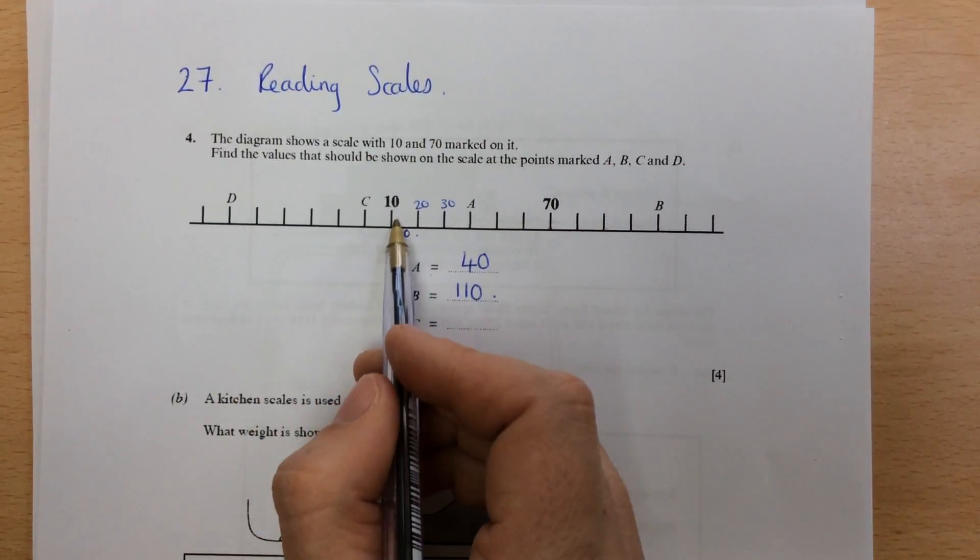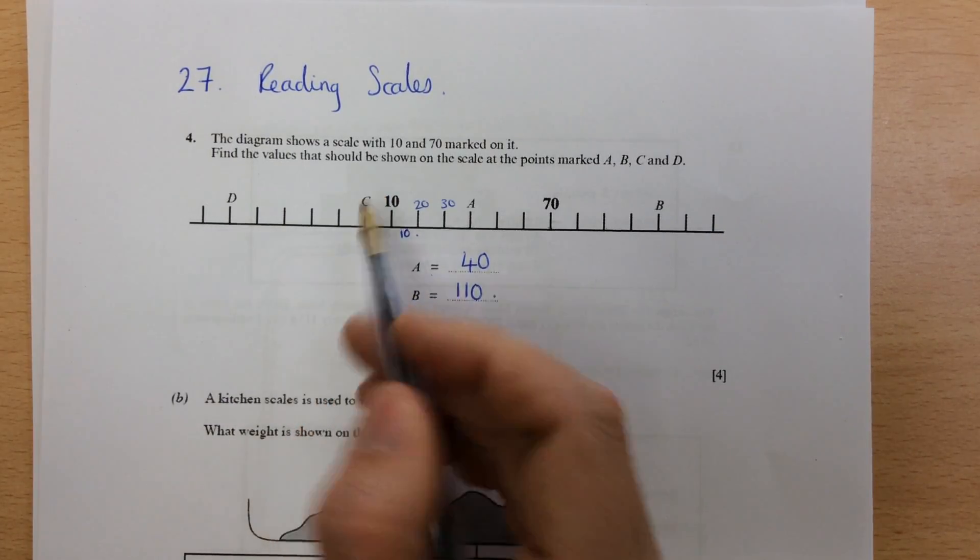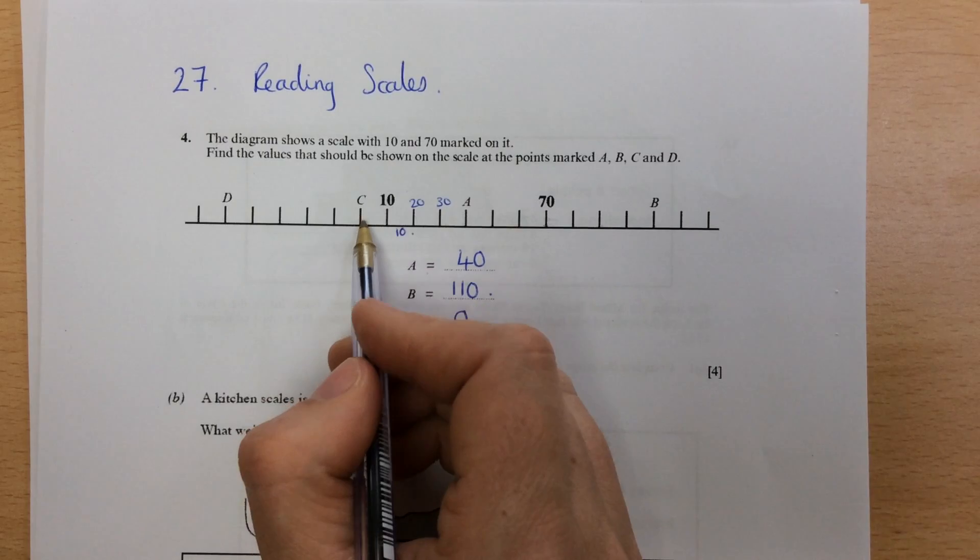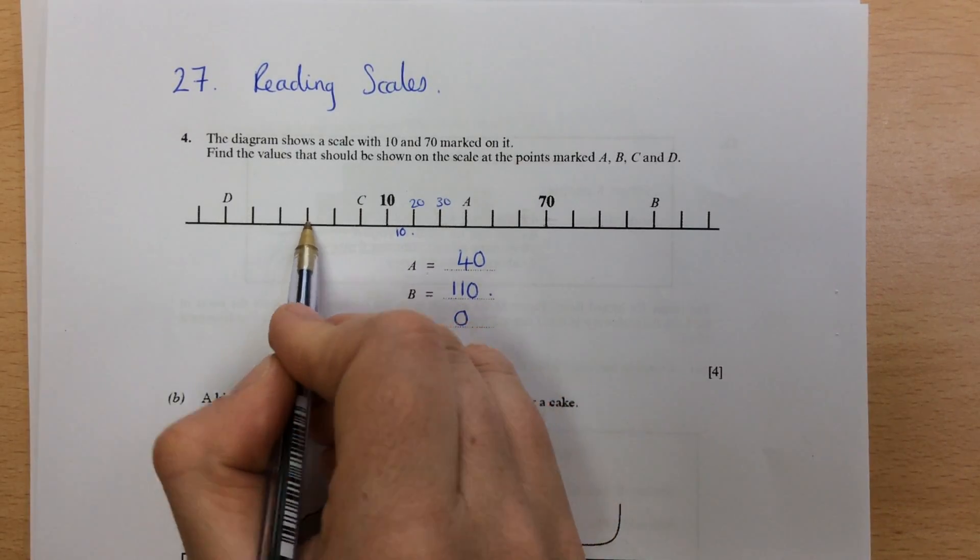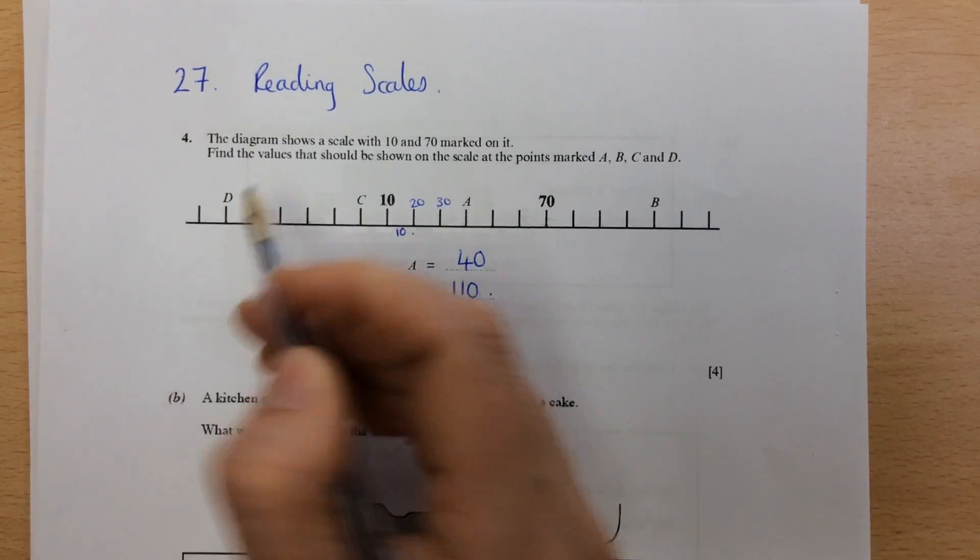Now we're going down for C. So 10, take away the 10, is going to be 0. Minus 10, minus 20, minus 30, minus 40, minus 50.